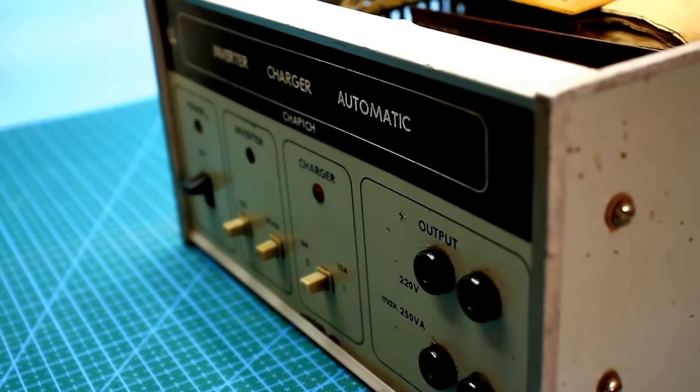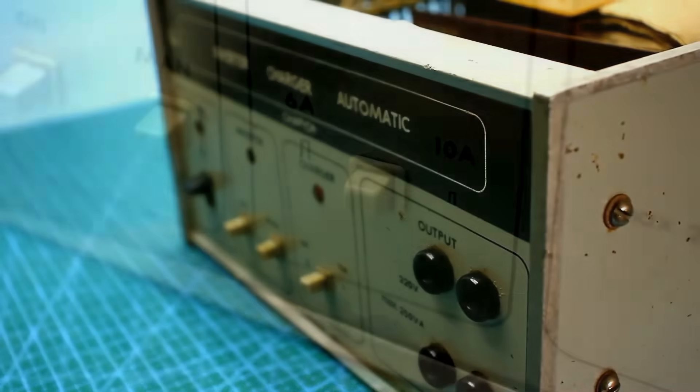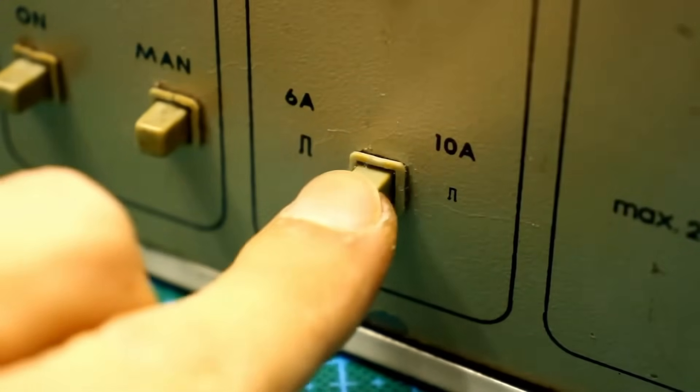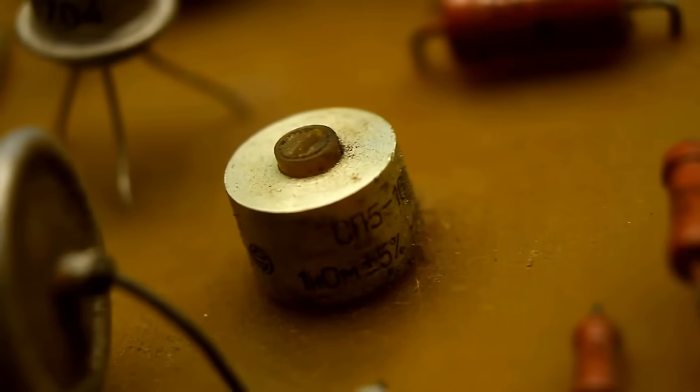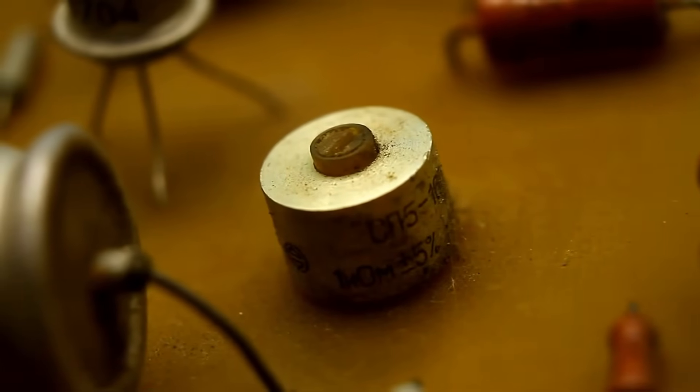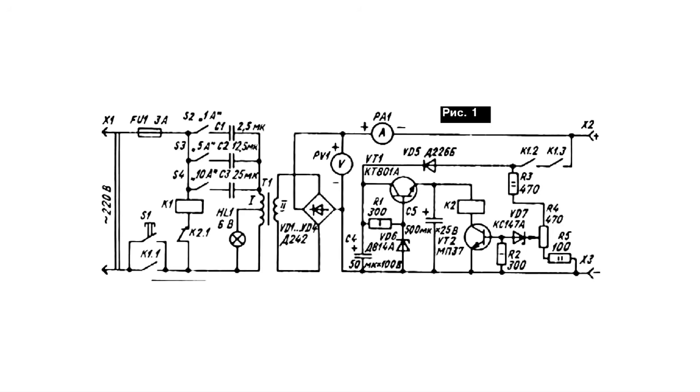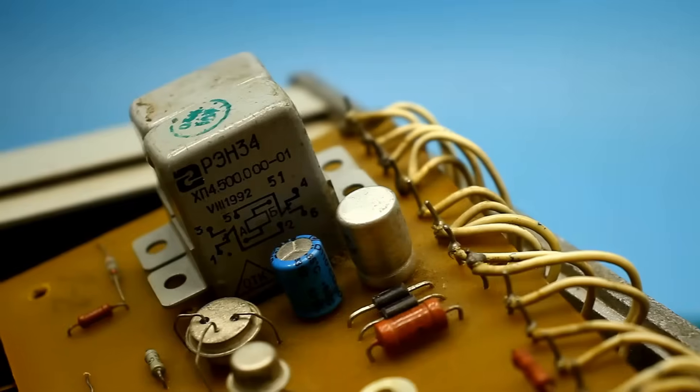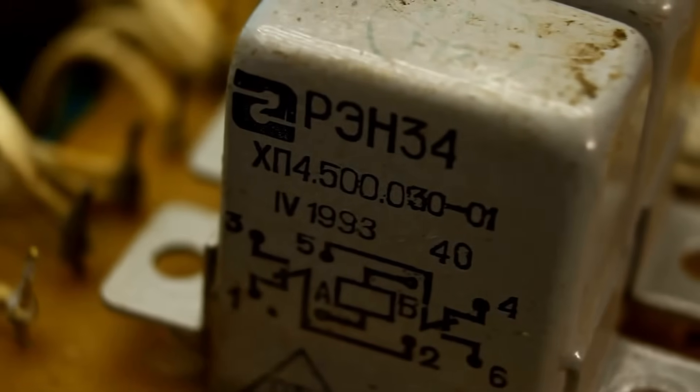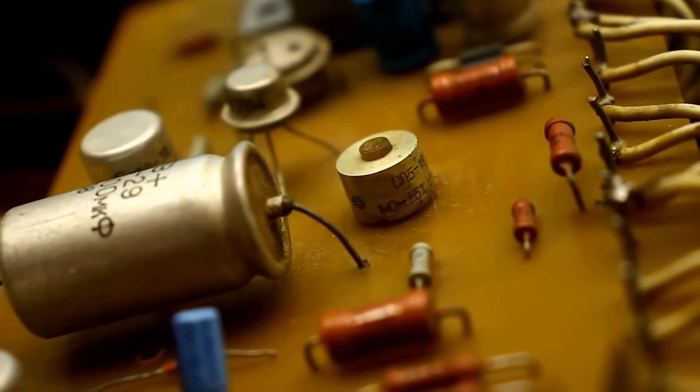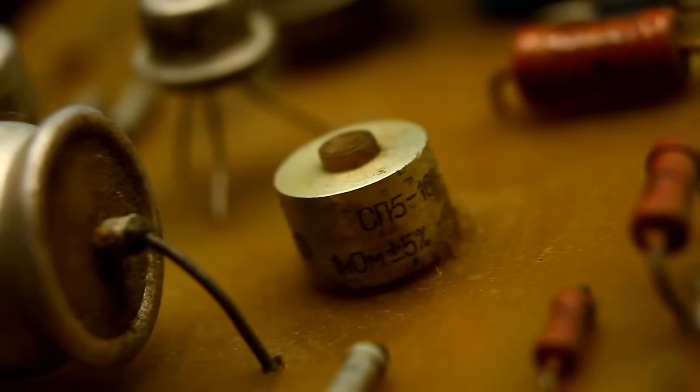However, the charger circuit is much more interesting. The charging current can be either 6 or 10 amps. Moreover, the charging is automatic and the device turns off if the battery is fully charged. How is this implemented? All attention to the circuit. The charger has only two low-power transistors. This is, in theory, a stabilizer that monitors the voltage on the battery. If it reaches the required value, the relay is triggered and the charging stops. The required voltage for triggering can be set with a trimmer resistor located on the board.